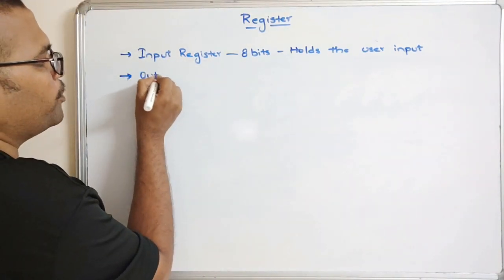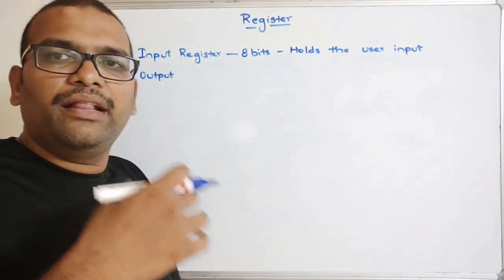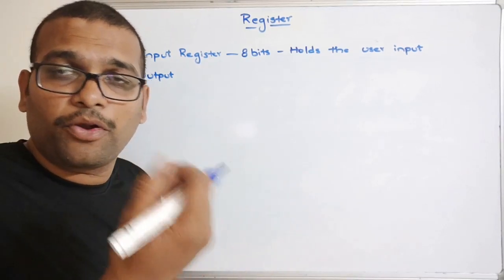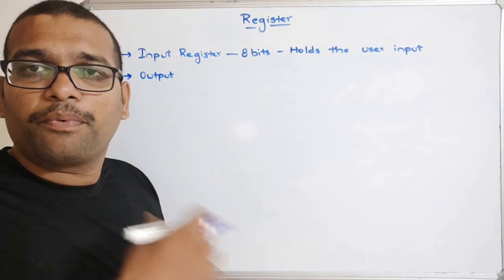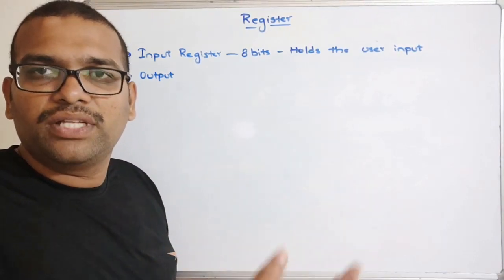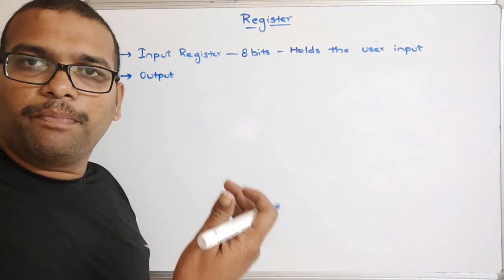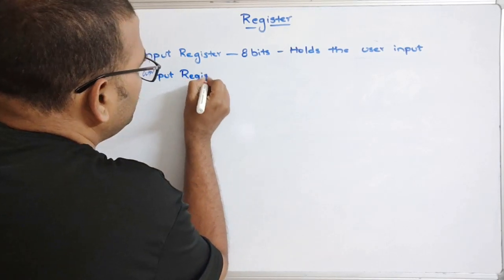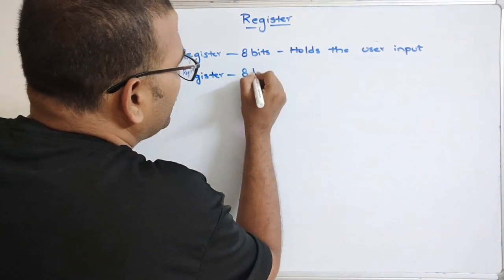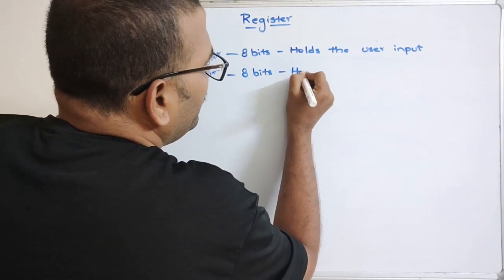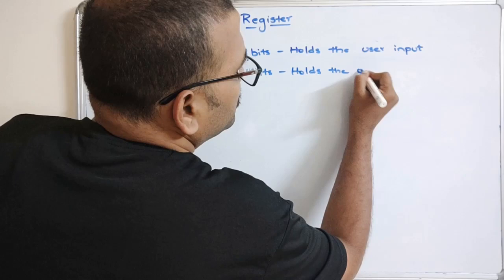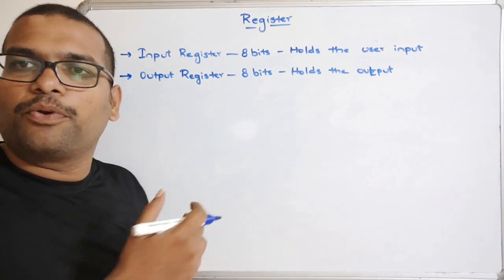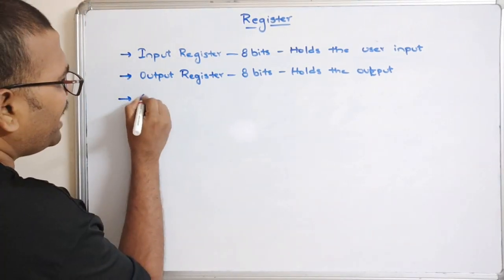The next one is the Output Register. A computer reads input, the processor takes that input, processes the instruction, and produces output. Whatever output is produced by the processor will be stored in the Output Register, which is also 8 bits in size.